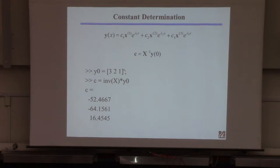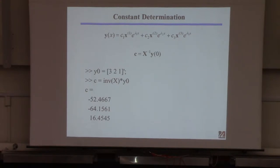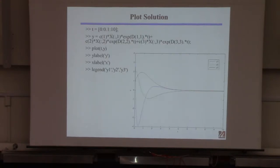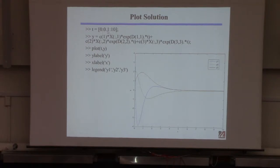Now I have all the constants C, all three eigenvalues, and all three eigenvectors. I can plot the response. First, I form a time vector using the linspace or colon command — starting at 0, ending at 10, in increments of 0.1 — creating a vector 0, 0.1, 0.2, 0.3, all the way up to 10.